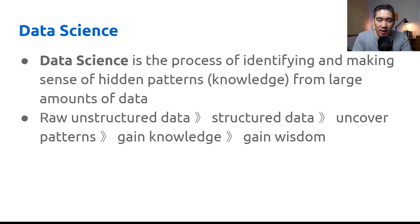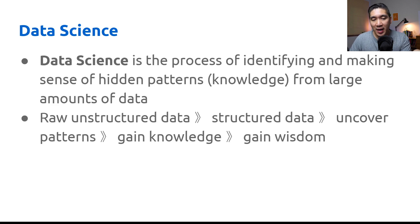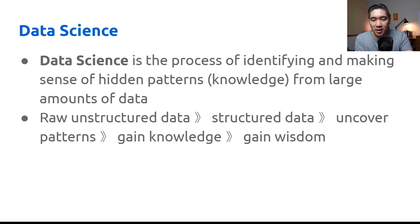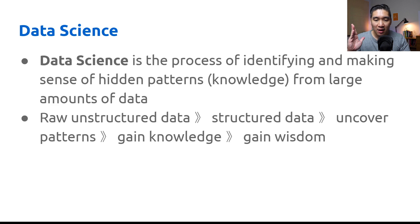Data science is the process of identifying and making sense of hidden patterns — this hidden knowledge found in large amounts of data. Typically, data follows a hierarchy: going from raw unstructured data to becoming more structured data. Once we structure the data, we can uncover patterns; once we have the patterns, we can gain knowledge; and finally, we can apply it to have wisdom.